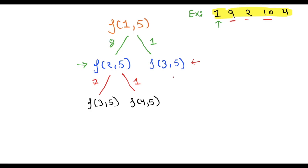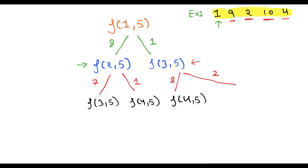From the third stone, the frog has two options: jump to the fourth stone or to the fifth stone. If it jumps to the fourth stone, the cost is |h[3] - h[4]| = |2 - 10| = 8, and we need f(4, 5). If it jumps to the fifth stone, the cost is |2 - 4| = 2, and we need f(5, 5).